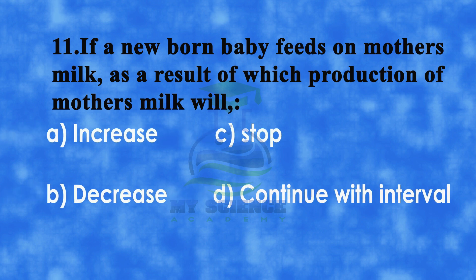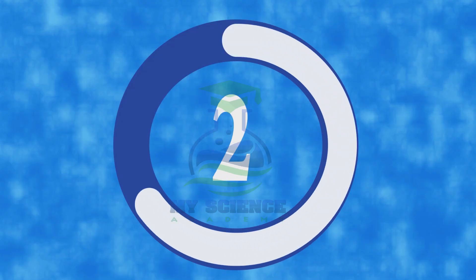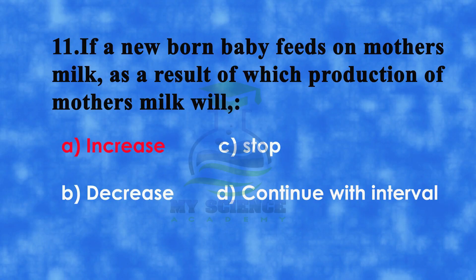Number 11: If a newborn baby feeds on mother's milk, as a result of which, production of mother's milk will. A: increase, B: decrease, C: stop, or D: continue with interval. And correct answer is A: increase.